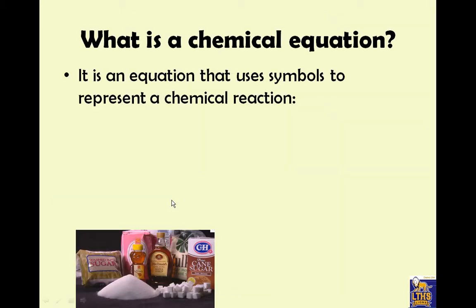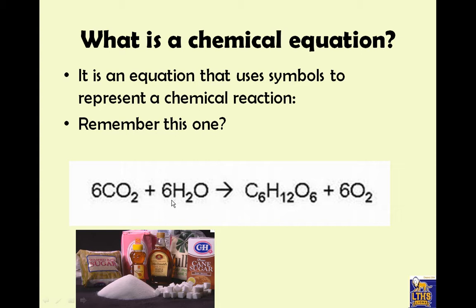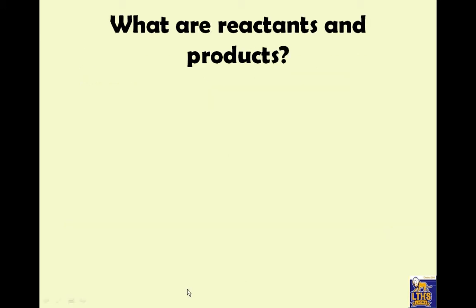So what is a chemical equation? It's a chemical sentence that uses symbols to represent a chemical reaction. So look at all that sugar down there. What happens to sugar? Well, it gets made, not what happens to it, sugar gets made in photosynthesis. Alright, so this is a chemical reaction that symbolizes what goes on in photosynthesis.